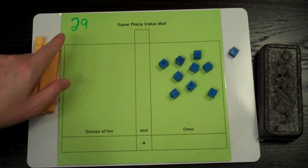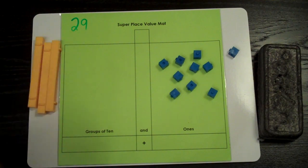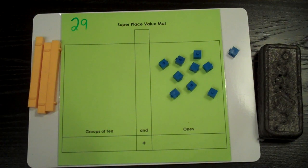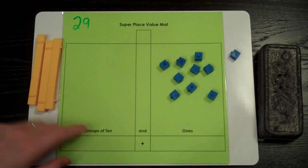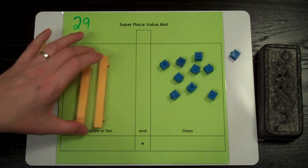This number has two in the tens place. We are going to count, and as we count, we're going to put our tens rods onto the place value mat in the tens place. One group of ten, two groups of ten.